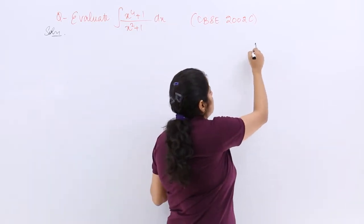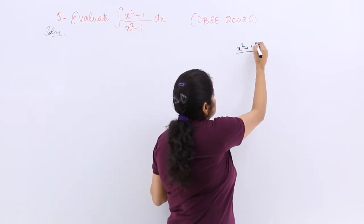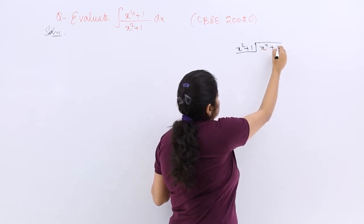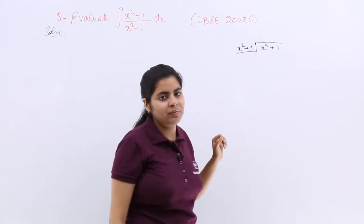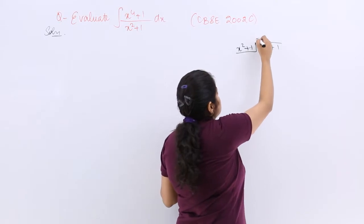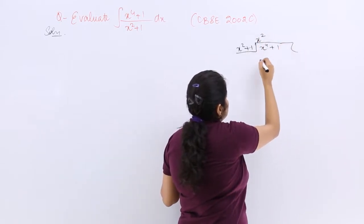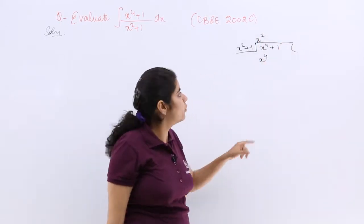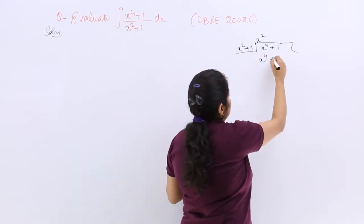Let me do the long division. Here I have x squared plus 1. Here I have x raised to the power 4 plus 1. Now you know how to do it, right? So it is x squared here. It makes it x raised to the power 4. Then 1 and 2 x squared is plus x squared.